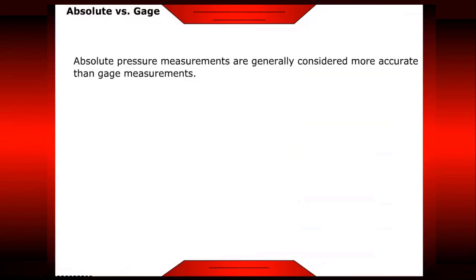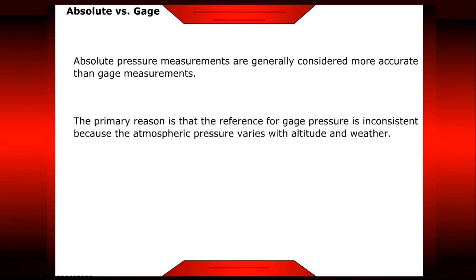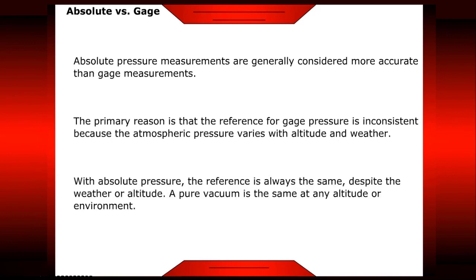Absolute versus gauge. Absolute pressure measurements are generally considered more accurate than gauge measurements. The primary reason is that the reference for gauge pressure is inconsistent, because atmospheric pressure varies with altitude and weather. With absolute pressure, the reference is always the same despite the weather or altitude. A pure vacuum is the same at any altitude or environment.